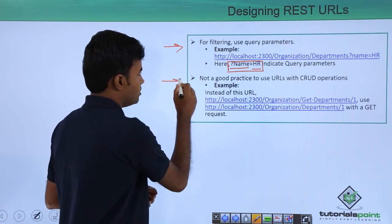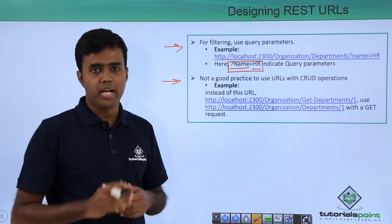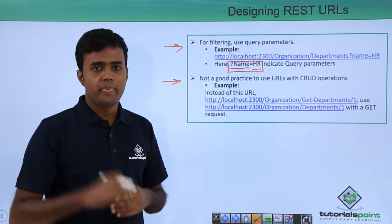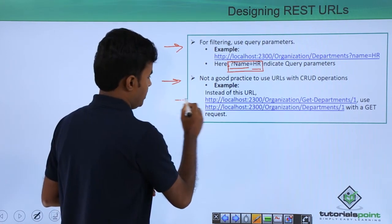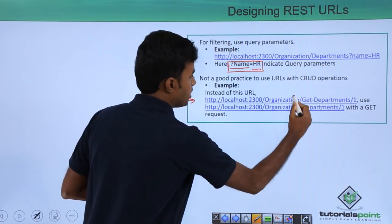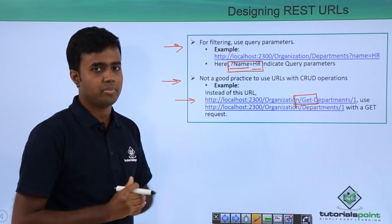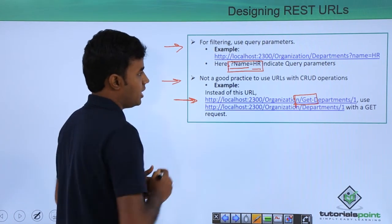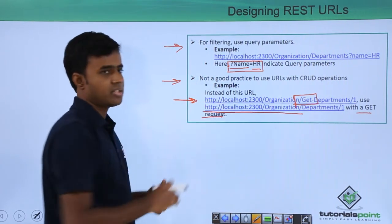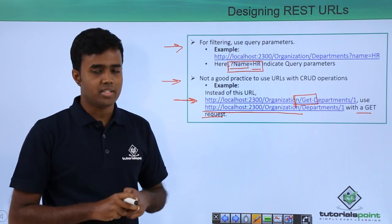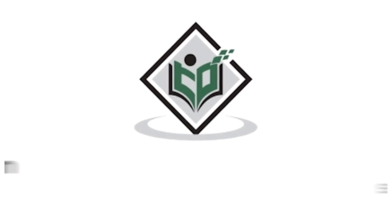The last tip is: do not use CRUD operations within your URLs. CRUD means create, read, update, and delete. Your URLs should not indicate those operations — for example, a URL saying 'get-department' implies reading data. Instead, use a clean resource URL like '/departments' with a GET HTTP request, where the HTTP method itself conveys the operation. Thank you — tutorialspoint.com, simply easy learning.